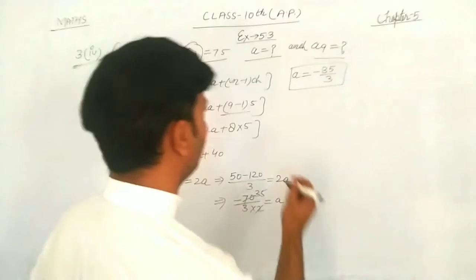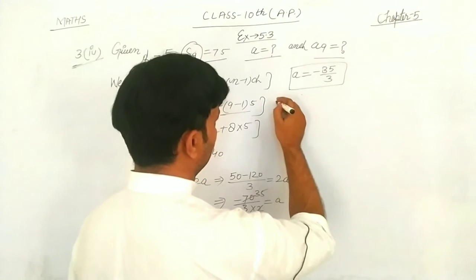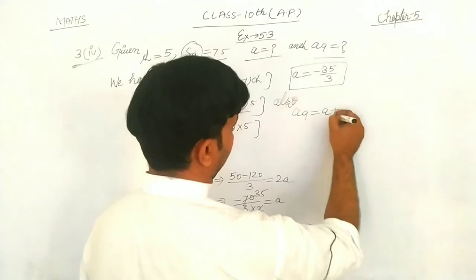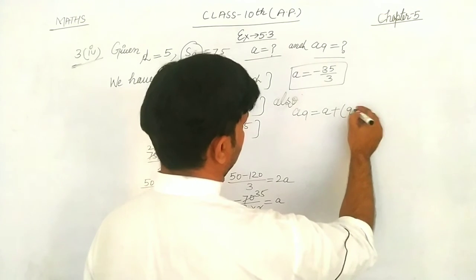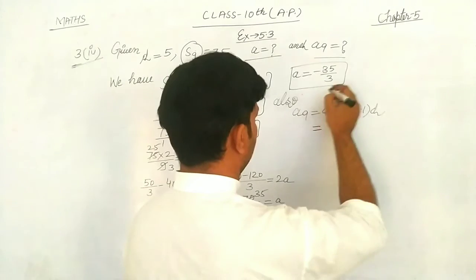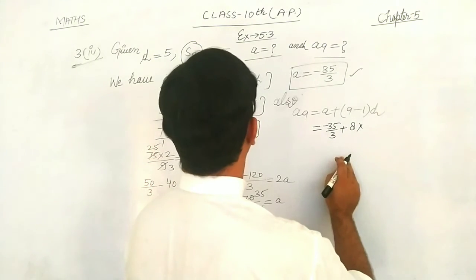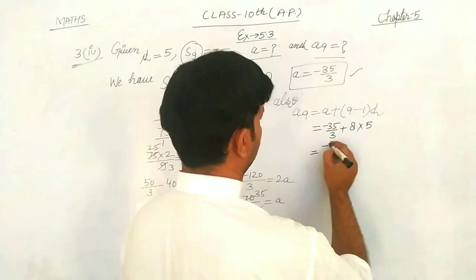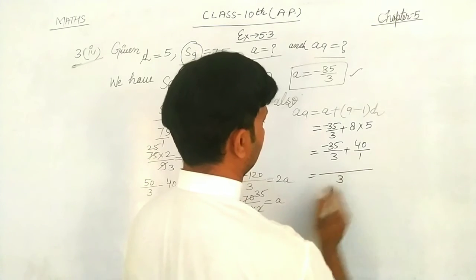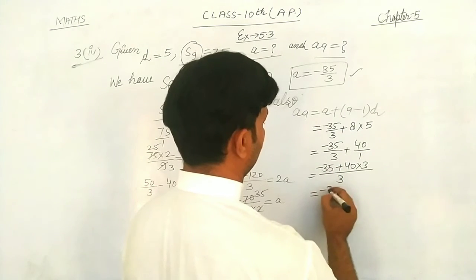Now we need to find a9. We apply the nth term formula: a9 equals a plus (9 minus 1) times d. Substituting: a9 equals negative 35 over 3 plus 8 times 5, which is negative 35 over 3 plus 40.